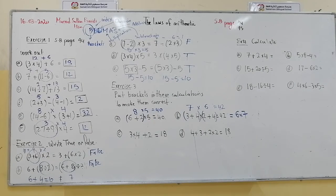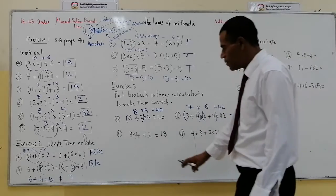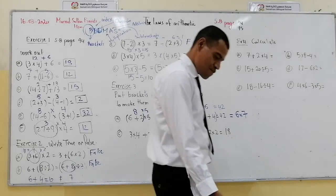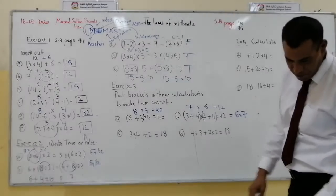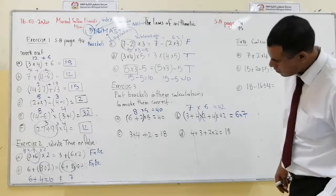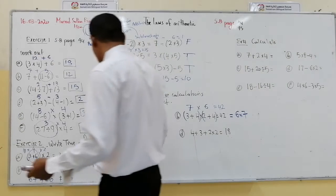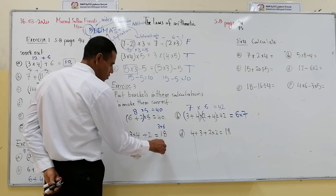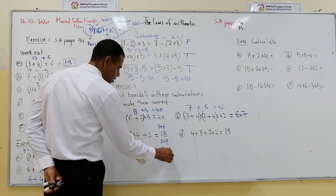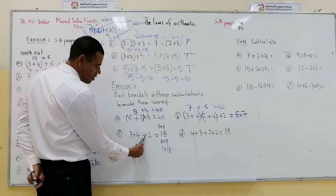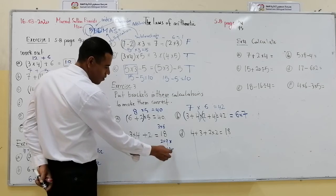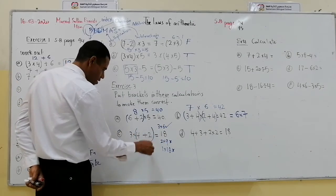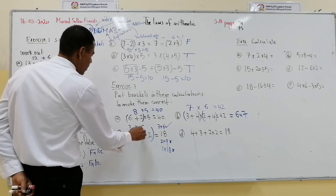The next: put brackets to make 3 multiplied by 4 plus 2 equal 18. How can we make 18? We can write it as 3 multiplied by 6. The sum of 4 and 2 is 6. So 3 multiplied by (4 plus 2) gives us 18.